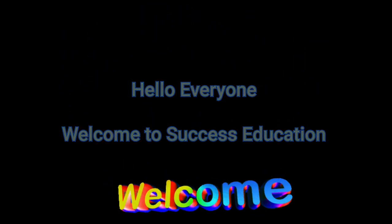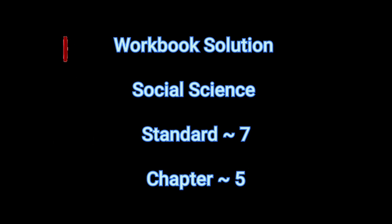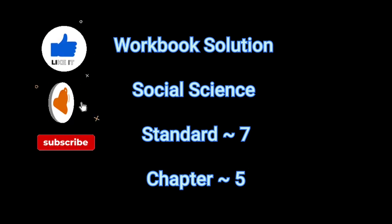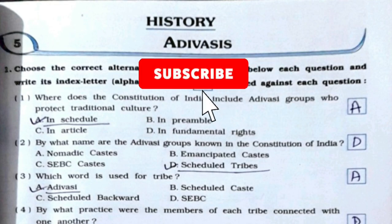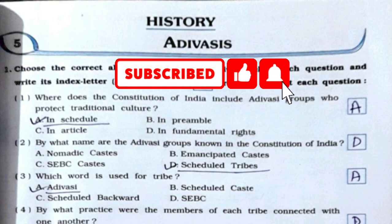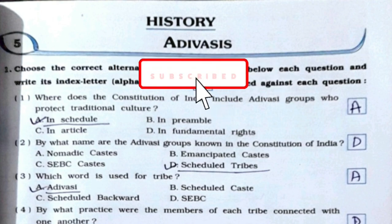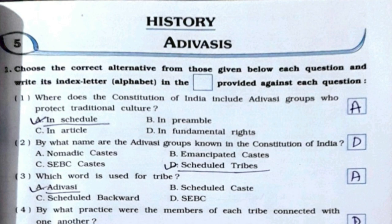Hello everyone, welcome to Success Education. Today we are going to do the workbook solution for Social Science for Standard 7, Chapter number 5, i.e., Adivasis. Don't forget to hit the like, share, and comment button, and please do subscribe my channel for more videos. Now we'll be starting with the MCQs.